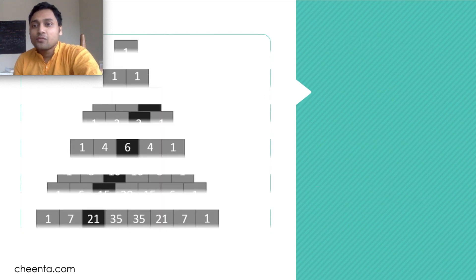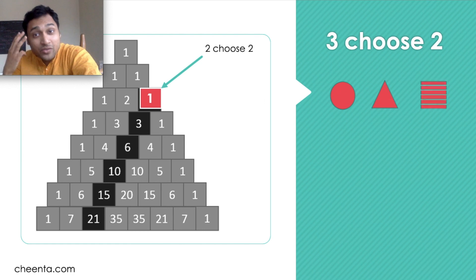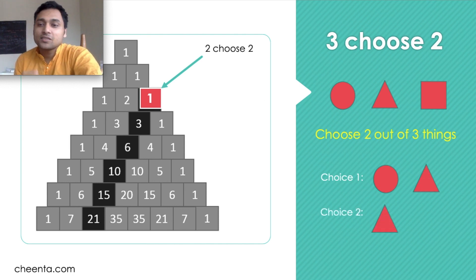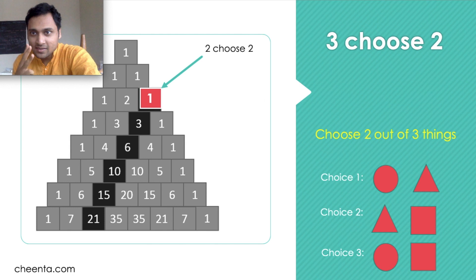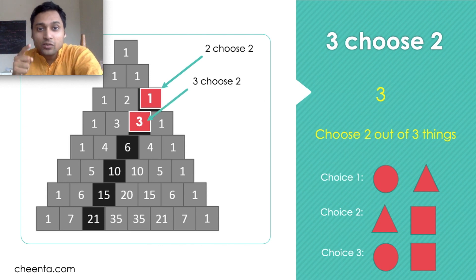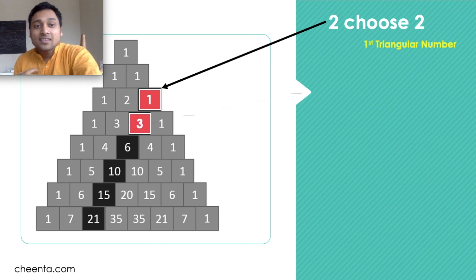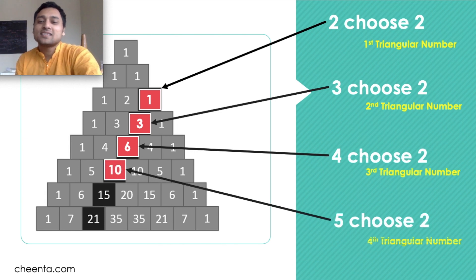Things get more interesting with 3 choose 2. You have three objects — circle, triangle, and square — and you want to choose two. Choice one: circle and triangle. Choice two: triangle and square. Choice three: circle and square. So 3 choose 2 equals 3, which is the second triangular number and appears in Pascal's Triangle. The pattern continues: 2 choose 2 is the first triangular number, 3 choose 2 is the second, 4 choose 2 is the third, and 5 choose 2 is the fourth triangular number.